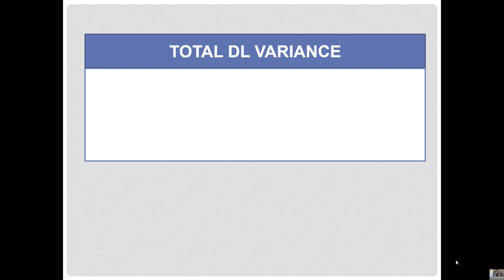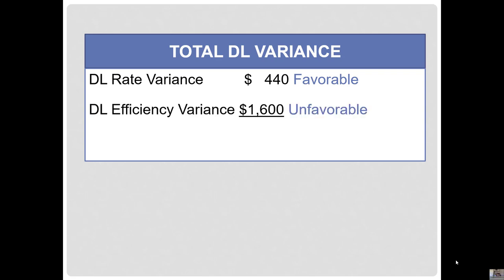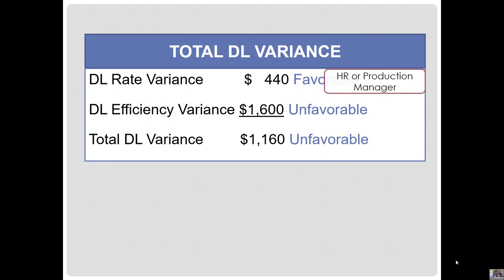Our total direct labor variance: we had a rate variance of $440 favorable and an efficiency variance of $1,600 unfavorable. Because one is favorable and one is unfavorable, you net them out — it comes to $1,160 unfavorable, since the unfavorable variance exceeds the favorable. The rate variance is typically the responsibility of HR or the production manager regarding skill level and overtime. The efficiency variance is typically the responsibility of the production manager, whose job is to oversee efficient use of laborers.